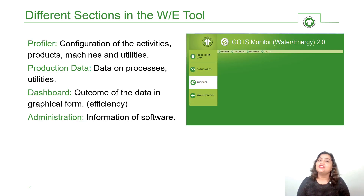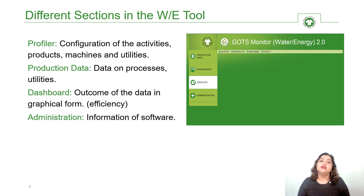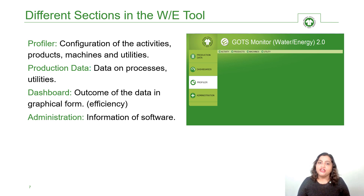There are four sections in the tool. The first section is a profiler, where you will provide information about the processes, materials, and equipment being used. The second section is production data, where data related to water, energy, and chemicals will be provided.